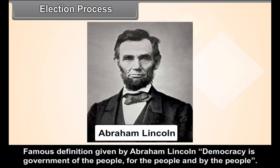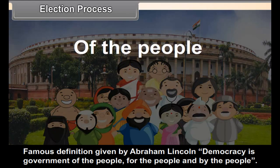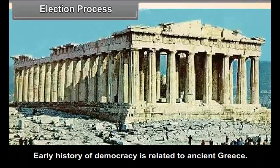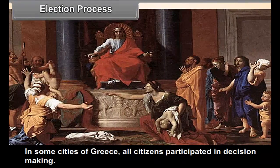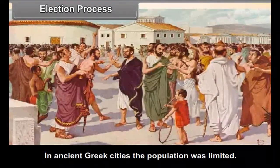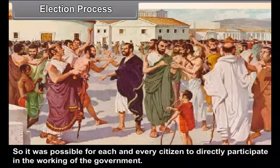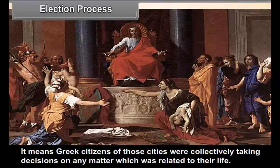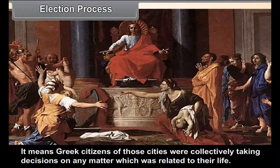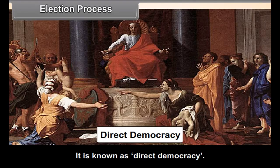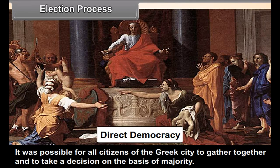The famous definition given by Abraham Lincoln: 'Democracy is government of the people, for the people, and by the people.' Early history of democracy is related to ancient Greece, where all citizens participated in decision making. Since the population was limited, every citizen could directly participate in the working of the government. Greek citizens collectively took decisions on matters related to their life — this is known as direct democracy, with decisions made on the basis of majority.